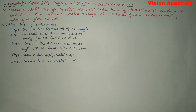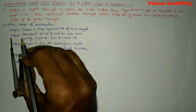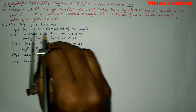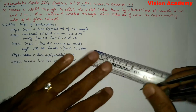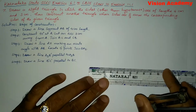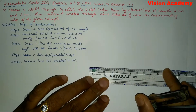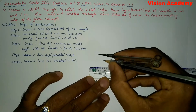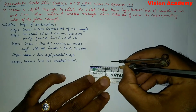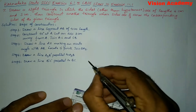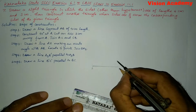Now let us find the solution for the given problem. Here the steps of construction are given. The first step: draw a line segment AB of 4 cm length. Now let us draw a 4 cm line segment and name this as AB.